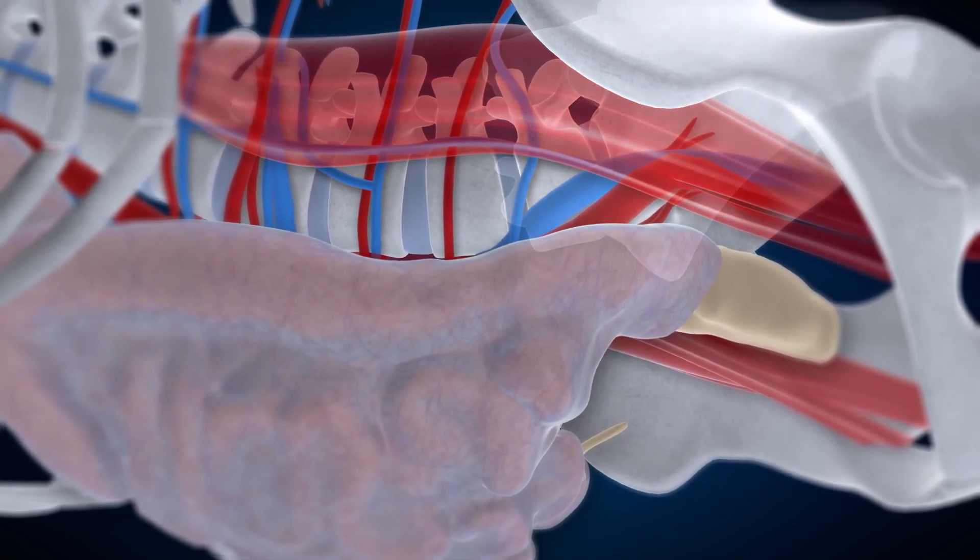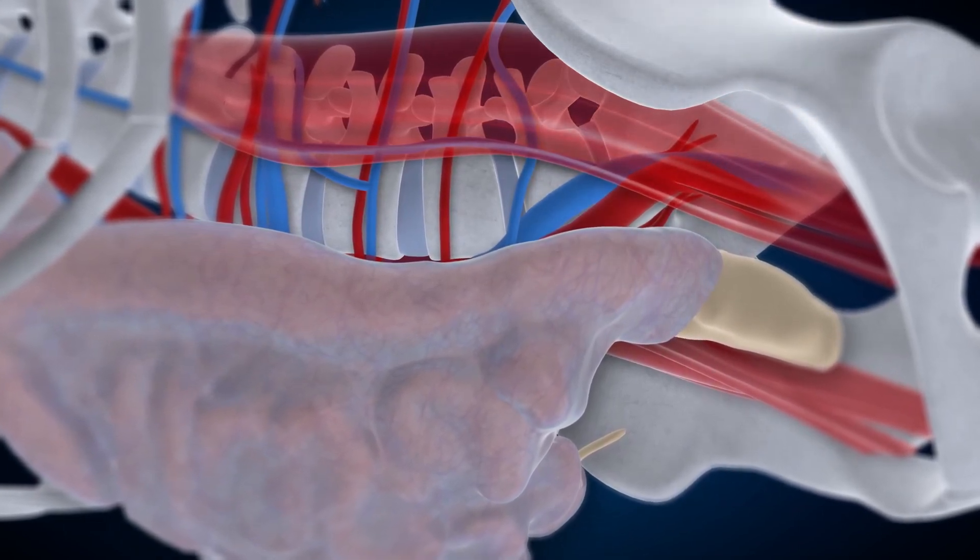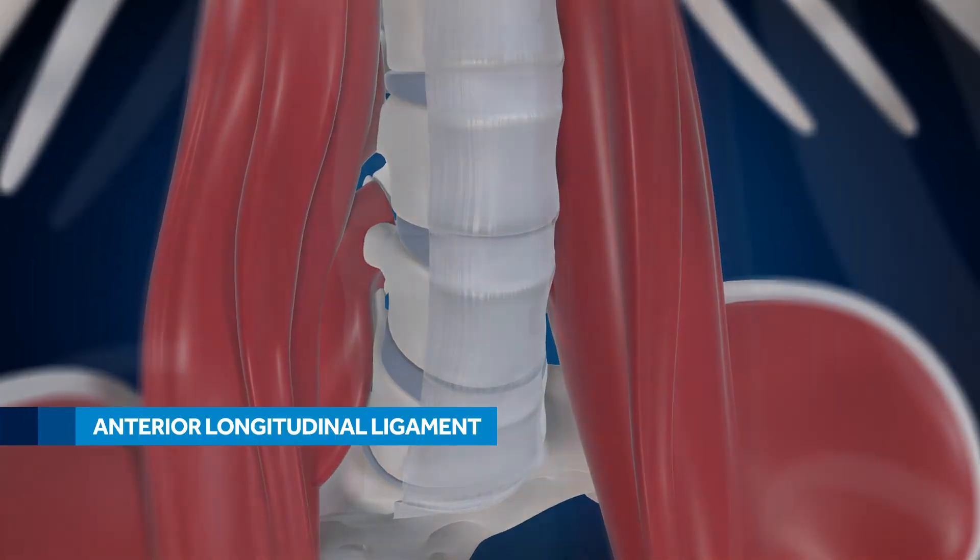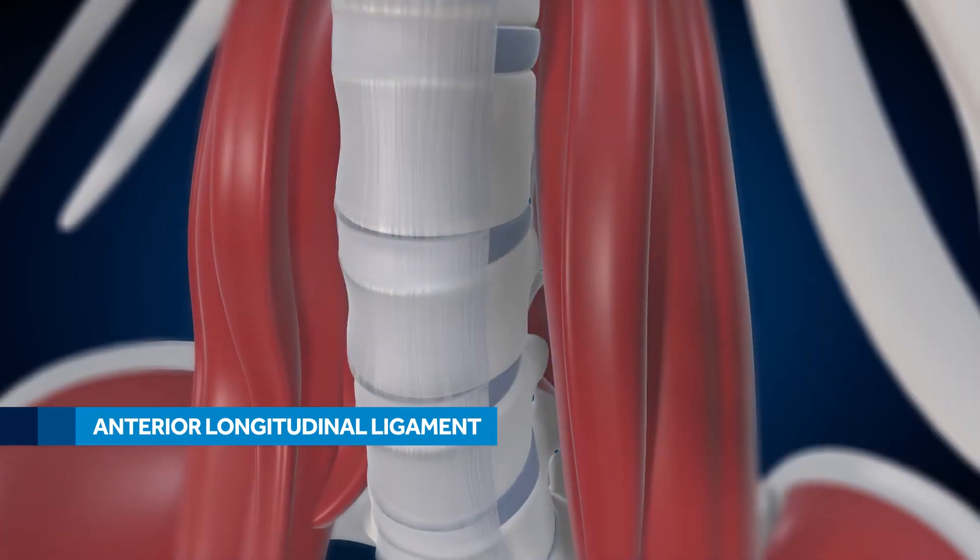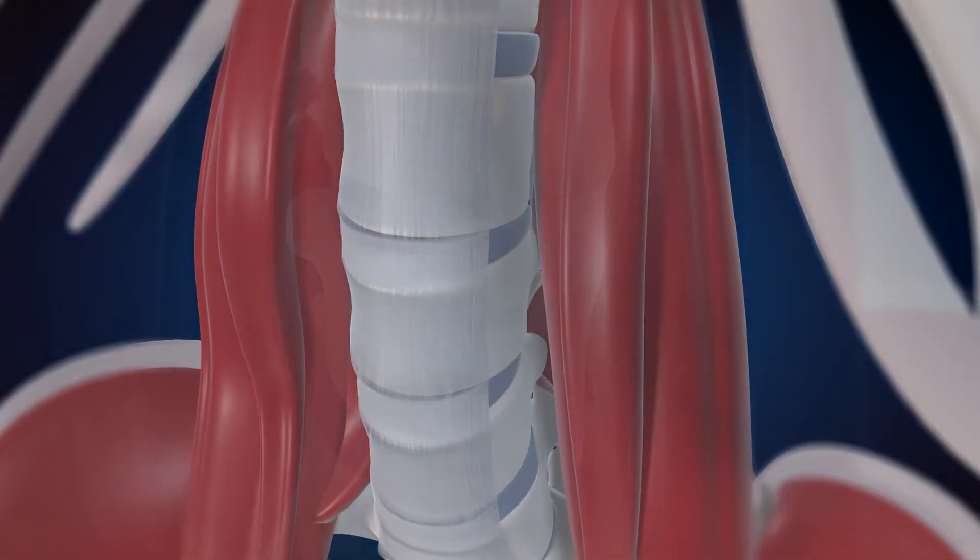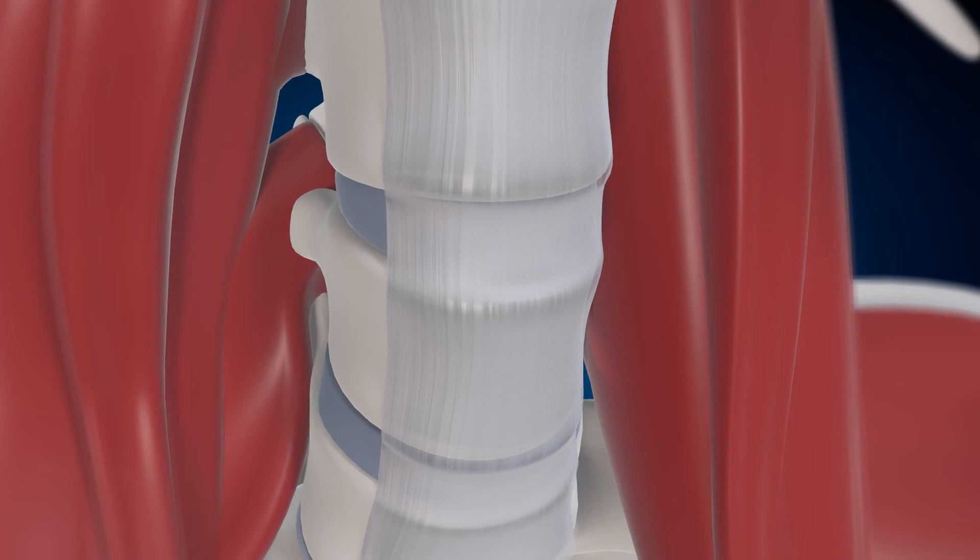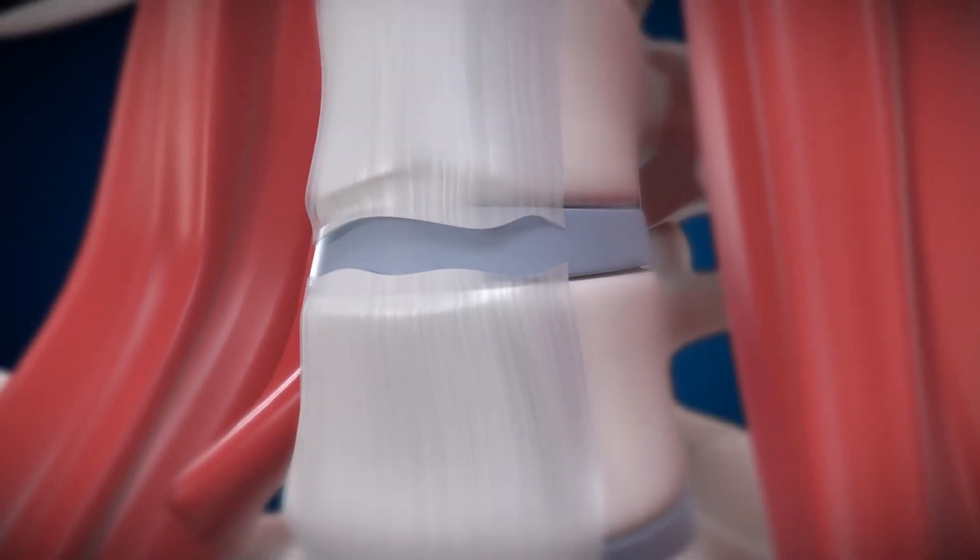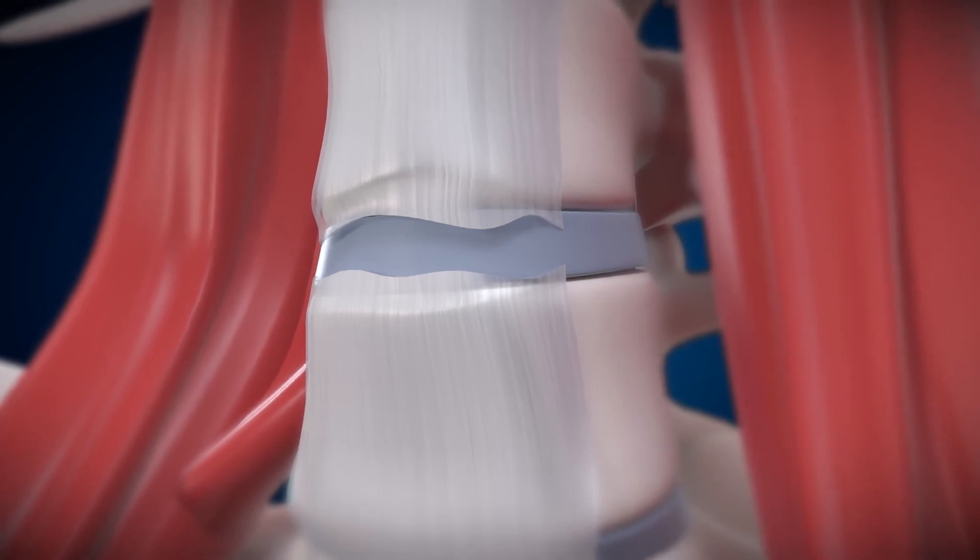The ALL is attached to each vertebral body inferiorly and superiorly at the endplates level. OLIF-25 allows direct visualization of the ALL, and surgeons may leave the ligament intact or release the ALL for greater lordosis.